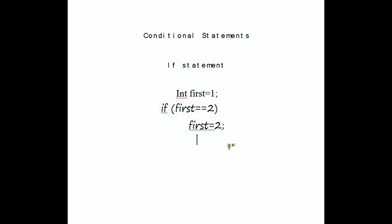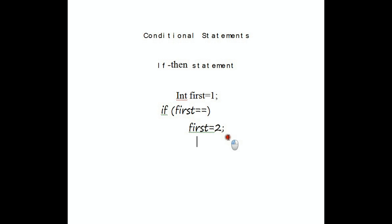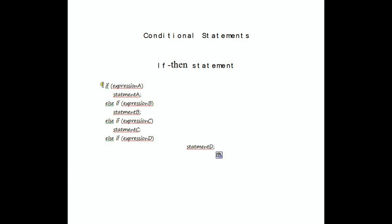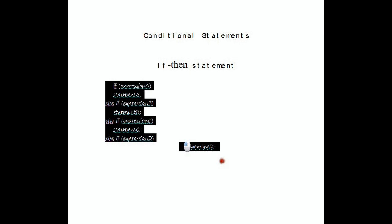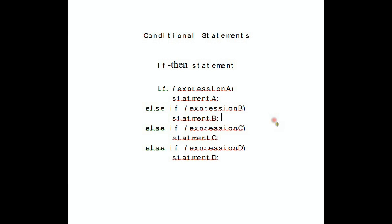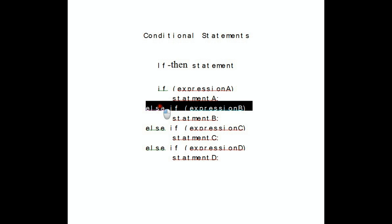Now talking about the if-then conditional statement — we use the if-then conditional statement when we've got a number of conditions that we want to check for. The general form of it is that it would check our first condition; if this is false, it checks the next one until it hits a true.